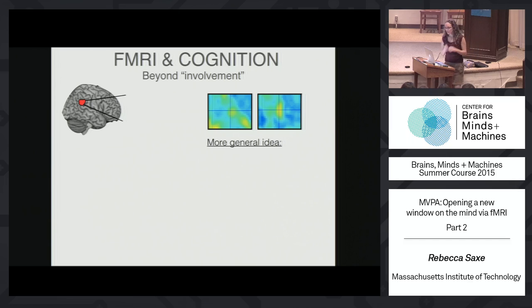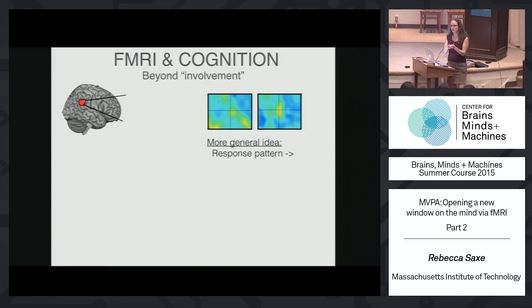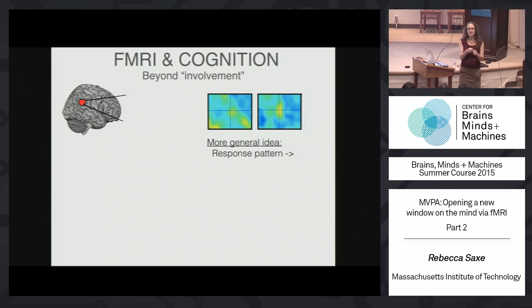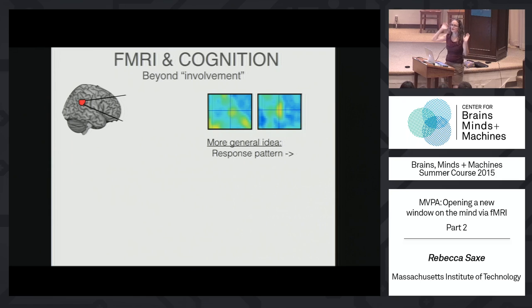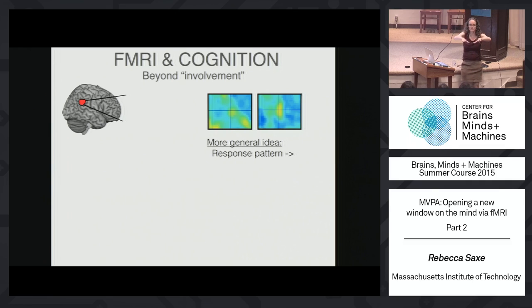The more general idea is that we can think of the response pattern to a stimulus in a set of voxels — for example, the voxels in a region — as a vector in voxel space. Every time you present a stimulus, you get the response of all the voxels. Instead of thinking of that as a spatial pattern, think of it as a vector in voxel space. Every voxel defines a dimension, and the position in voxel space is how much activity there was in each of those voxels.